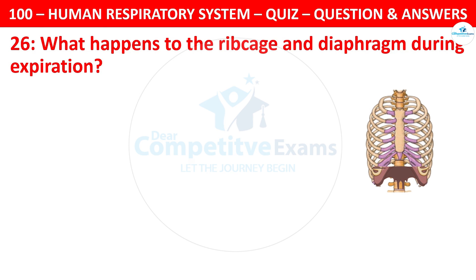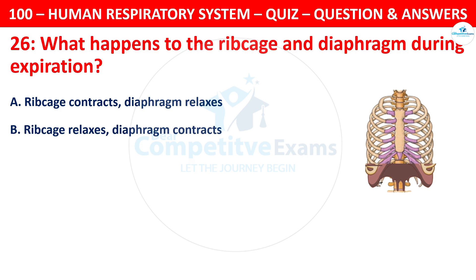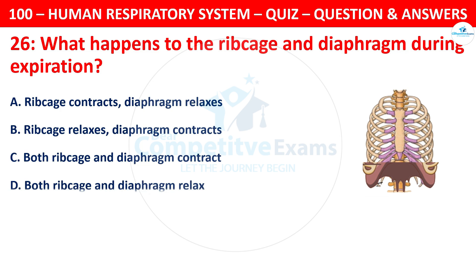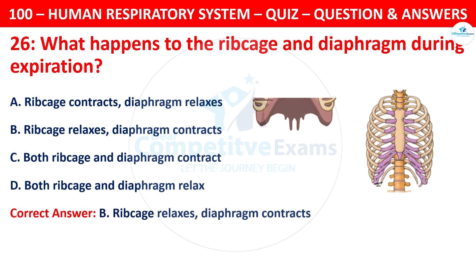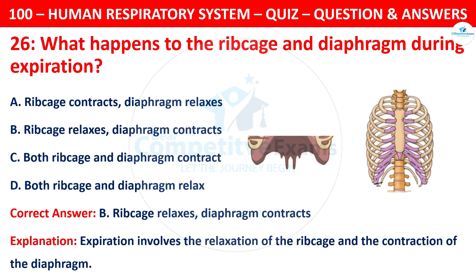What happens to the ribcage and diaphragm during expiration? Your options are: ribcage contracts and diaphragm relaxes; ribcage relaxes and diaphragm contracts; both ribcage and diaphragm contract; or both ribcage and diaphragm relax. The correct answer is B — ribcage relaxes and diaphragm contracts. Expiration involves the relaxation of the ribcage and contraction of the diaphragm.